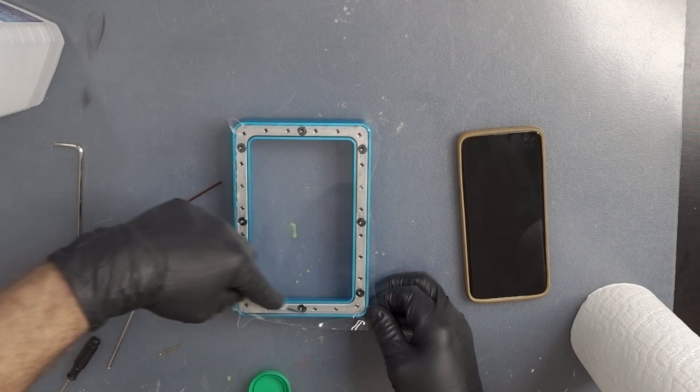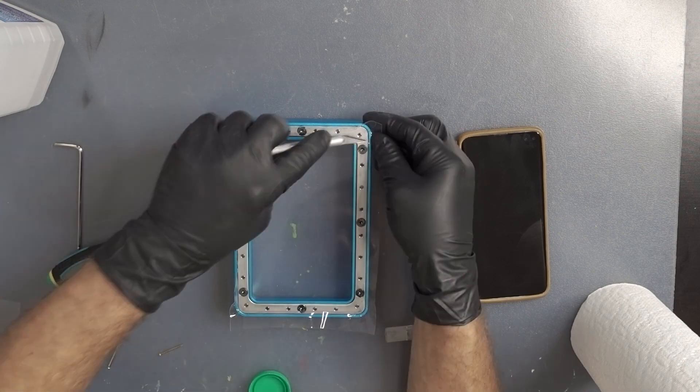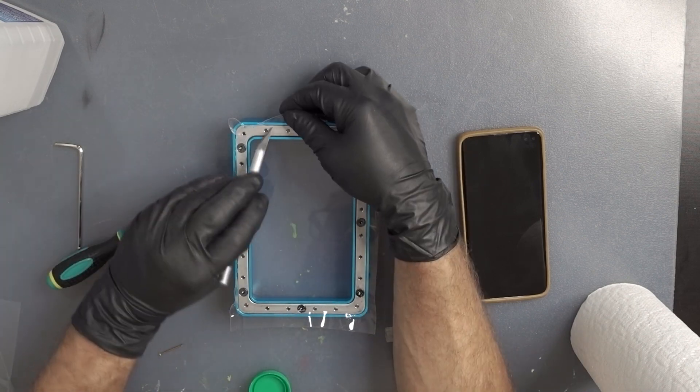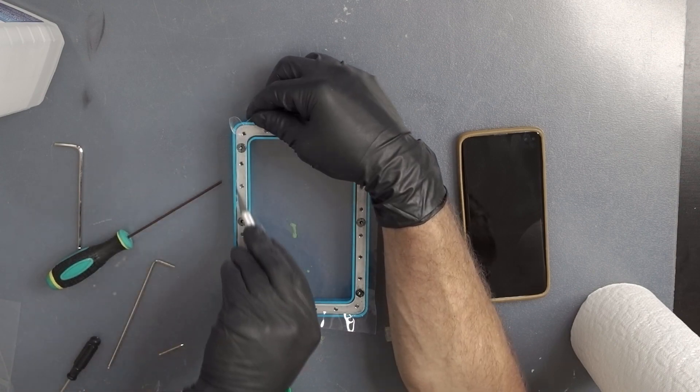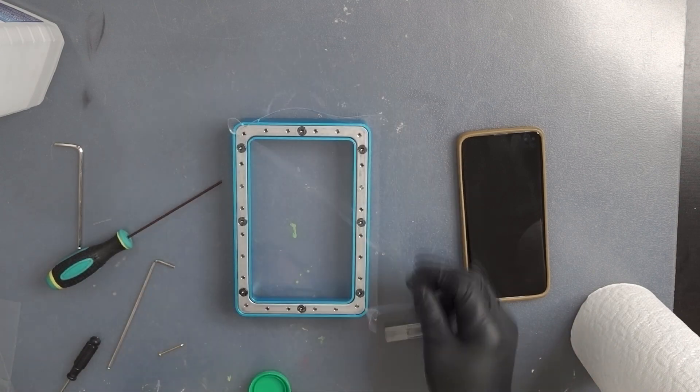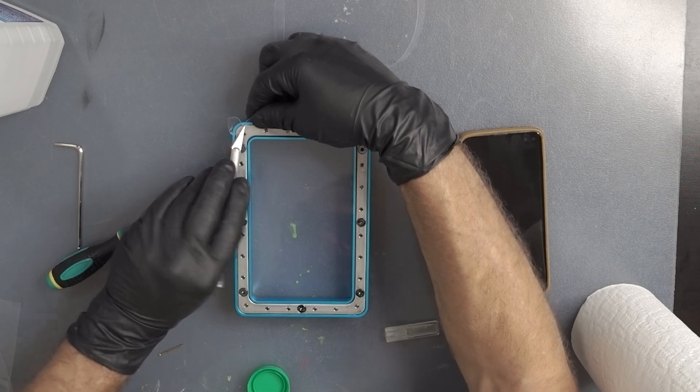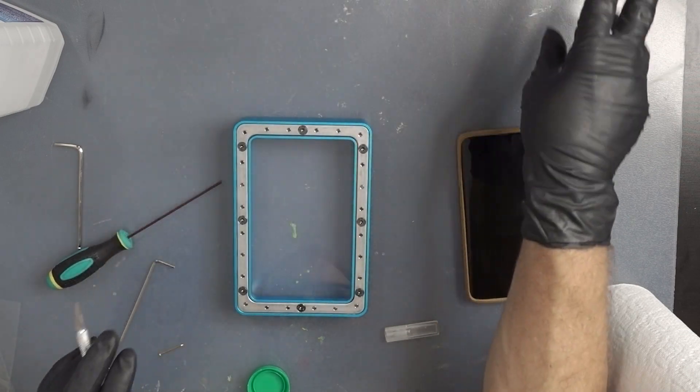I'm just going to remove the outer rim of plastic from the build plate itself. Once that is done, I am just going to get that out of there. Perfect.